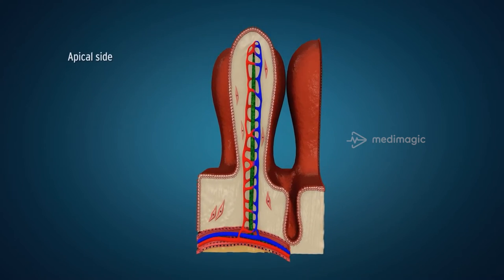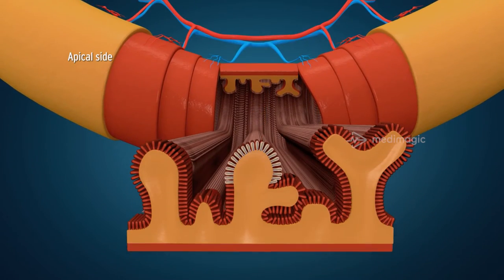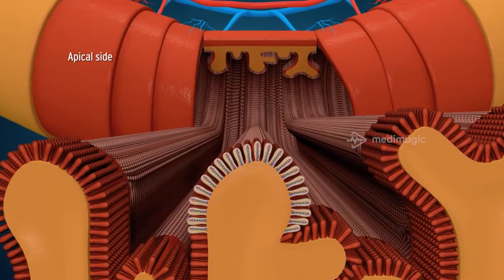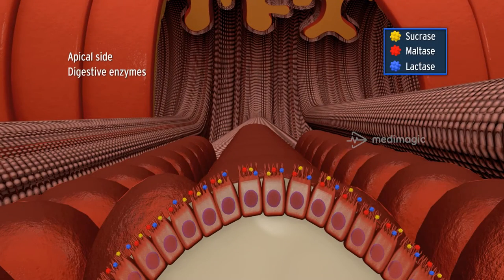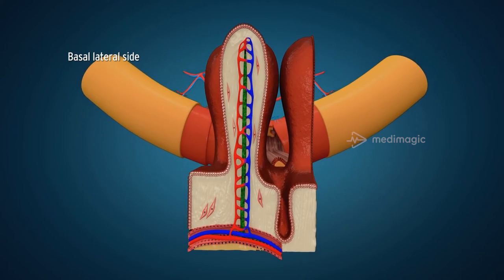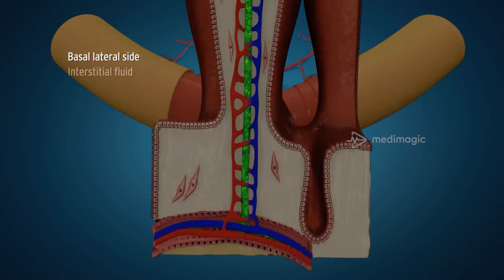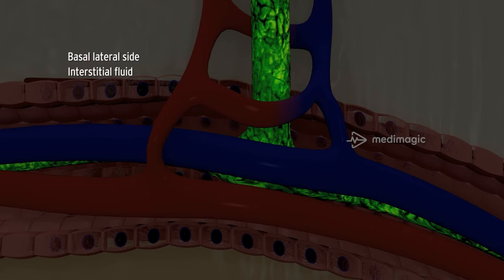The apical side of enterocytes points towards the lumen of the small intestine and contains digestive enzymes to break down disaccharides into monomeric forms. Below the basal lateral side of enterocytes there is an interstitial fluid which separates the blood vessel from the enterocytes.